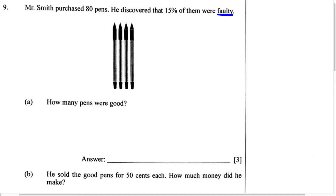So we know that 15% of these pens were faulty. Part A wants us to find out how many pens were good. In order to find out how many pens were good, we know 15% were faulty, and because percent is out of 100, if 15% were bad, we're just going to subtract 15% from 100% to find how many were good.